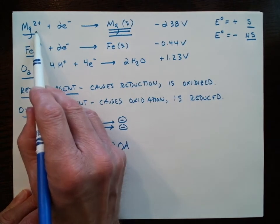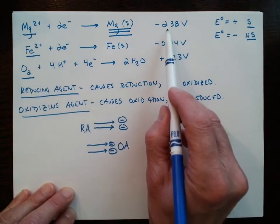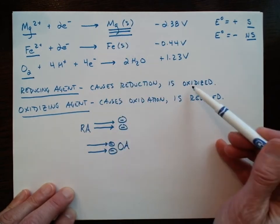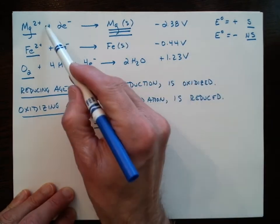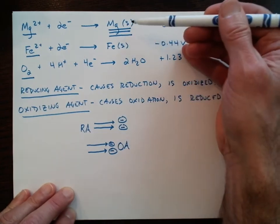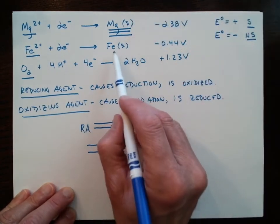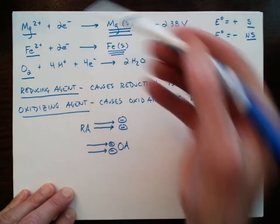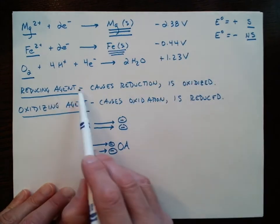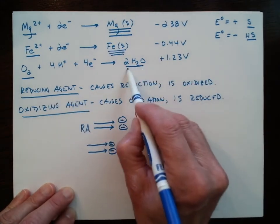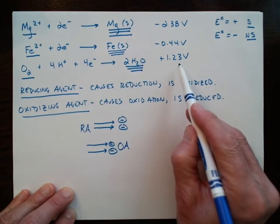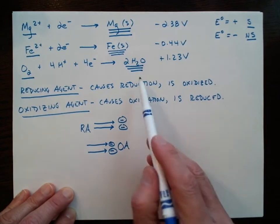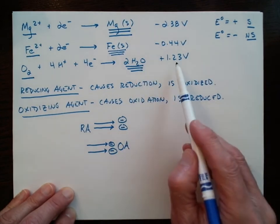If we flip the reaction, we flip the sign — so magnesium solid becomes a positive 2.38 volts. Solid magnesium is a really good reducing agent. Iron solid, if it goes in the oxidation direction, is a middle-of-the-road reducing agent. And water — if we look at it going in the oxidation direction — that's going to be a negative 1.23 volts. So if water gets oxidized, it's causing a reduction, but that makes it a really bad reducing agent at negative 1.23 volts.